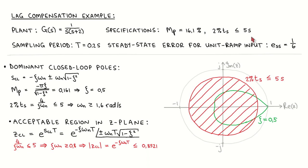The plant has a pole at s equal to zero, so it is of type one, and the closed loop system will therefore be able to follow a step reference input with zero steady state error. With no additional controller poles at z equal to one, the closed loop system would be able to follow a ramp reference input with a finite steady state error. The steady state specification is that the steady state error to a unit ramp input should be one divided by six.